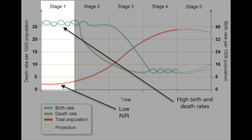Let's start taking a look at stage one of the demographic transition model. When we look at the model, we're going to see a lot of squiggly lines that are kind of high. That's showing you that the crude birth rate and crude death rates are very high in a country in this stage. Your crude birth rates mean you're having a lot of babies, and your crude death rates mean you're having a lot of deaths. That means you're not going to have much natural increase rate, or NIR — your population stays about the same even though it goes through periodic movements.